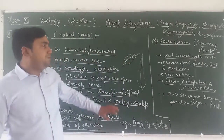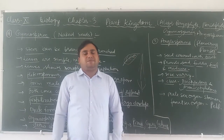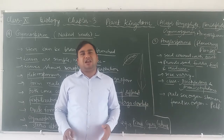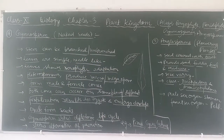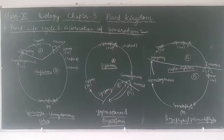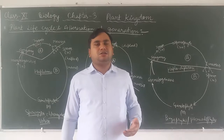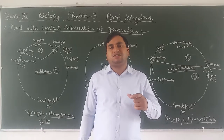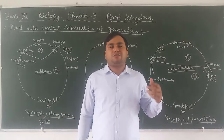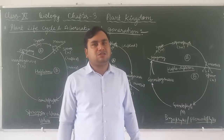This is all about Plant Kingdom — algae, bryophyta, pteridophyta, gymnosperm, and angiosperm. Our next topic covers the different life cycle patterns that occur in plants and some algae. There are three main life cycle patterns: haplontic, diplontic, and haplo-diplontic.